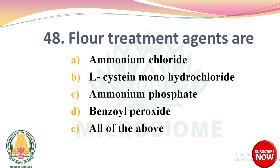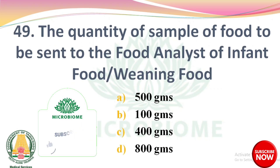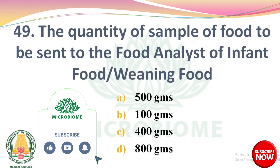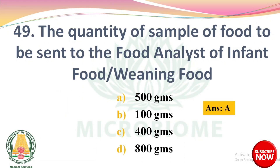Question 46: Flour treatment agents are — options: ammonium chloride, L-cysteine monohydrochloride, ammonium phosphate, benzoyl peroxide, all of the above. The right answer: option E, all of the above — ammonium chloride, L-cysteine monohydrochloride, ammonium phosphate and benzoyl peroxide are used as flour treatment agents. Question 47: The quantity of sample of food to be sent to food analyst of infant food or weaning food — options: 500 grams, 100 grams, 400 grams, 800 grams. The right answer: option A, 500 grams.